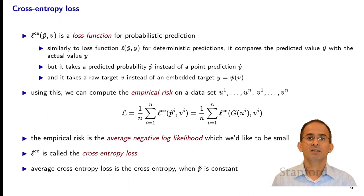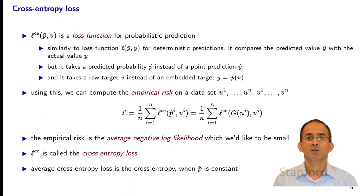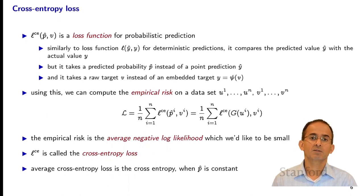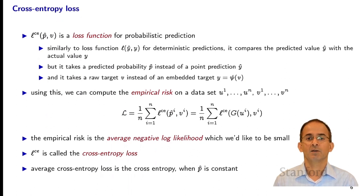One nice thing about this is that this is actually our performance metric. In regression and deterministic classification we had something we really cared about, such as the mean zero-one loss, but we couldn't actually minimize that, so we used a proxy loss. Here we don't need to do that, because the average value of the cross-entropy loss is the average negative log likelihood — the performance metric we care about. It is the probability of seeing those data points v_i under p-hat.